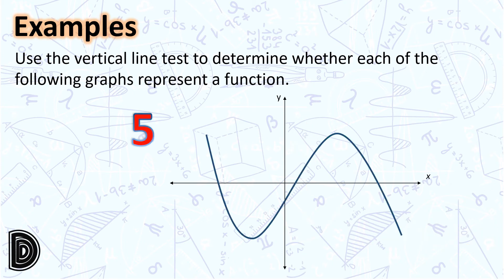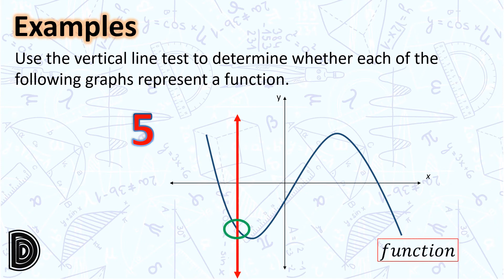Next, a graph representing a cubic relation. However we draw the vertical line test, we will observe that it will only intersect this graph at a single point. Hence, this is a function.